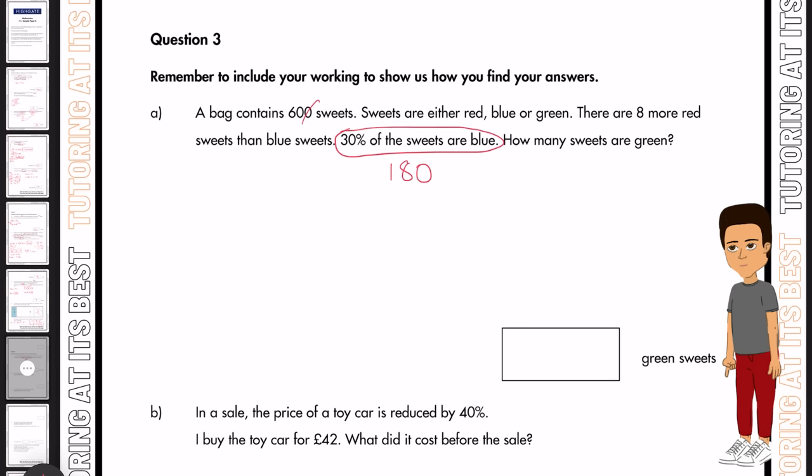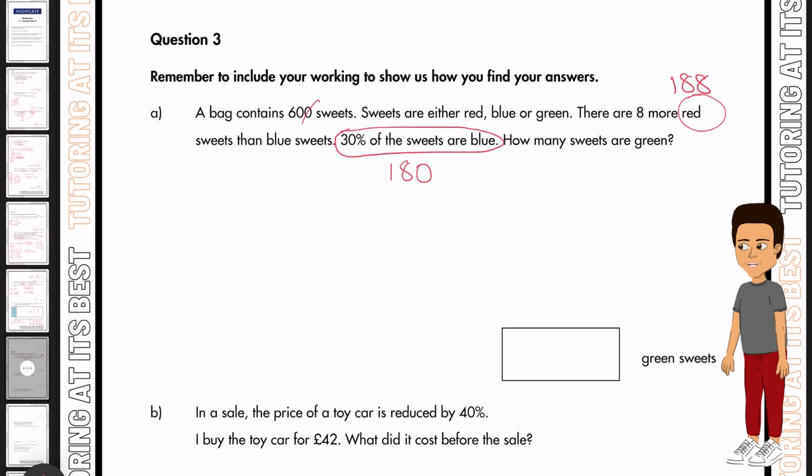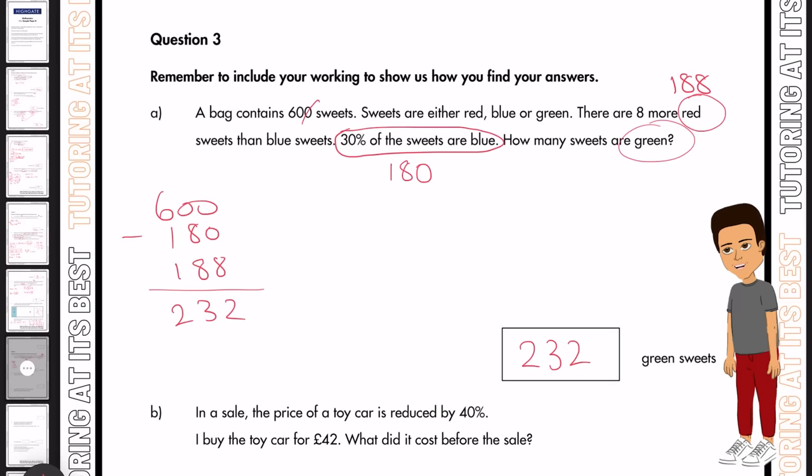And there are eight more red sweets than blue sweets. So in order to get the red sweets, we add eight on top and that's 188. So now we're left with calculating the green here. So the first thing we're going to do is subtract these values from each other. So we now know that we have 600 minus 180, which is your blue, and 188, which is your red. And that gives us 232. And that is how many green sweets we have.